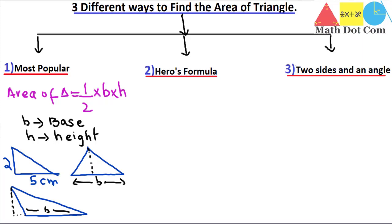This method is also applicable when you are given the other two sides of a right angle triangle. If you are given the hypotenuse and the base but not the height, you can easily find the height using the Pythagorean theorem. So this formula works well for most triangles where base and height are given.